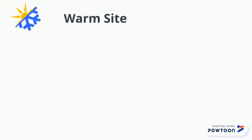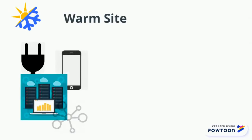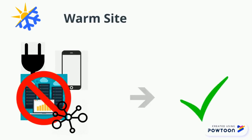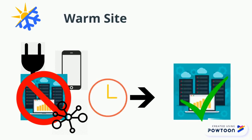A warm site is not as fully equipped as a hot site. It is configured with power, phone, network, and other utilities, and may have servers and other resources, but a warm site is not ready for immediate switchover. The time to switch over from the disaster-affected site to a warm site is more than that of a hot site.